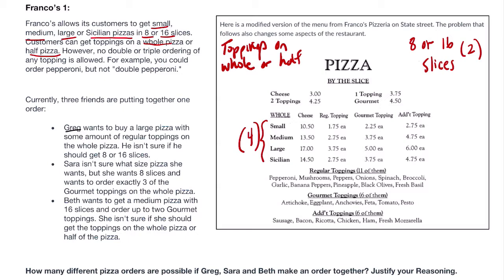And no double or triple ordering is allowed. That's a modification. So I focused this menu saying you can order pepperoni, but not double pepperoni. Now there are three people here, Greg and Sara and Beth, and they're ordering pizza together. They all have different rules about what they want to order. How many different types of orders are we dealing with here? So let's count them.